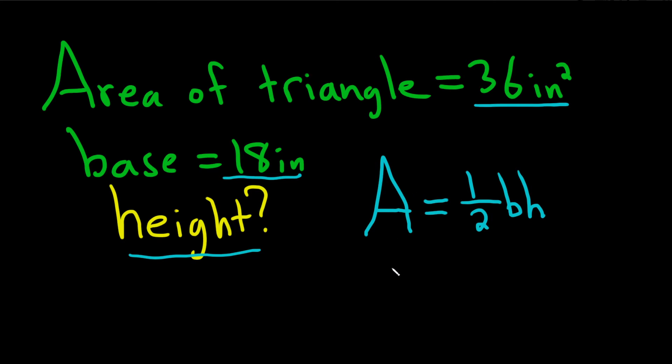And then what you can do is just plug in all of the numbers. So A is 36 inches squared, and that's equal to one-half, the base is 18 inches, and what's the height? Well we're looking for the height, that's the unknown, so times h.